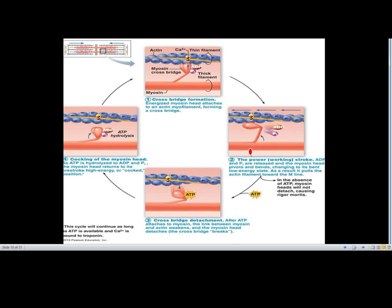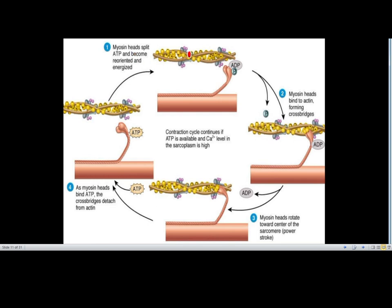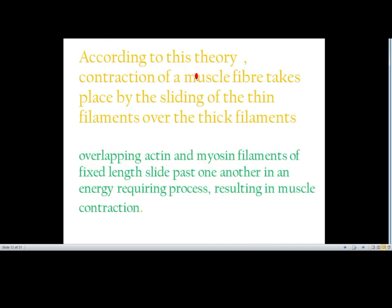The events of muscle contraction are as follows: myosin splits ATP and becomes reoriented and energized. The myosin head binds to actin, forming a cross bridge, producing ADP. Then the myosin head rotates towards the center of the sarcomere — this is called the power stroke. When ATP binds to the myosin head, the cross bridge detaches from actin. According to the sliding filament theory, contraction of a muscle fiber takes place by the sliding of the thin filament over the thick filament.